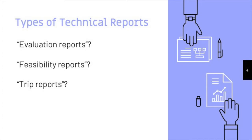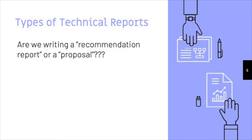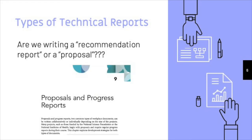For example, the type of report I've asked you to write is called a recommendation report in our textbook. But that term is often used to refer to a somewhat different type of report, in which the writer looks at two or more options and tries to make a recommendation in favor of one of those options. What our textbook calls a recommendation report is sometimes called a proposal — and to make matters worse, our textbook uses the term proposal to refer to a different type of document altogether, one covered in a completely different chapter.